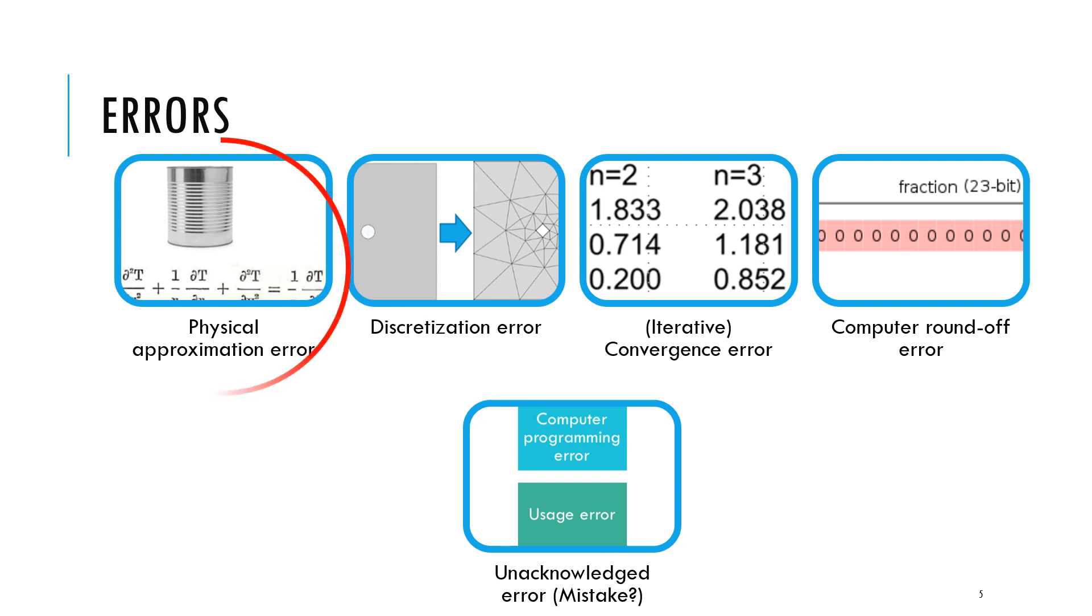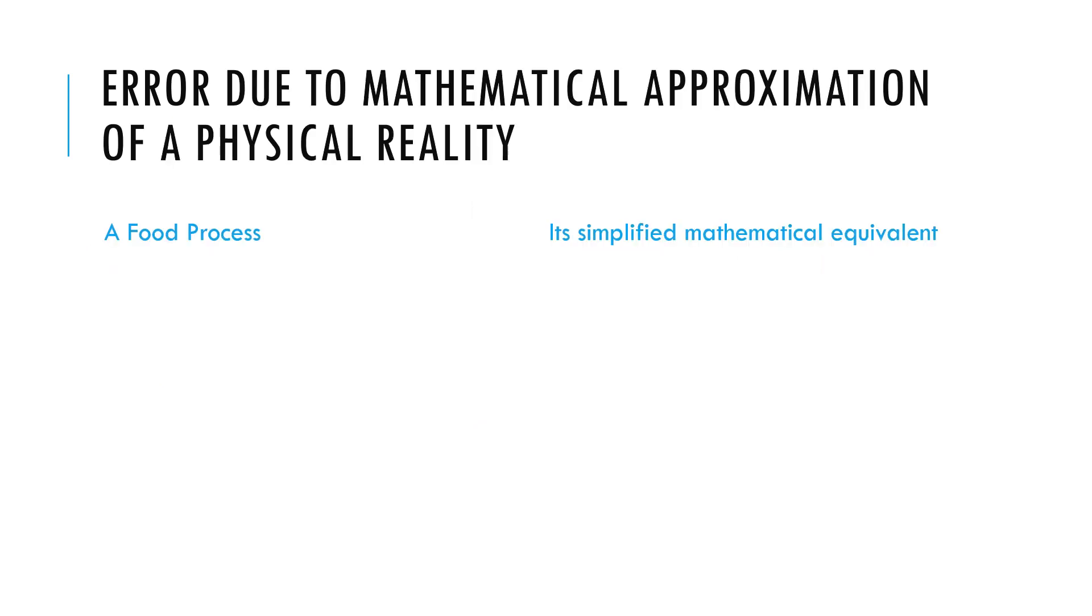So all these relate more to using commercial or third-party written software which has become more or less standard as we are trying to do modeling of processes. Now we get to the most important of the errors: the physical approximation error. Physical approximation error is error due to mathematical approximation of a physical reality.